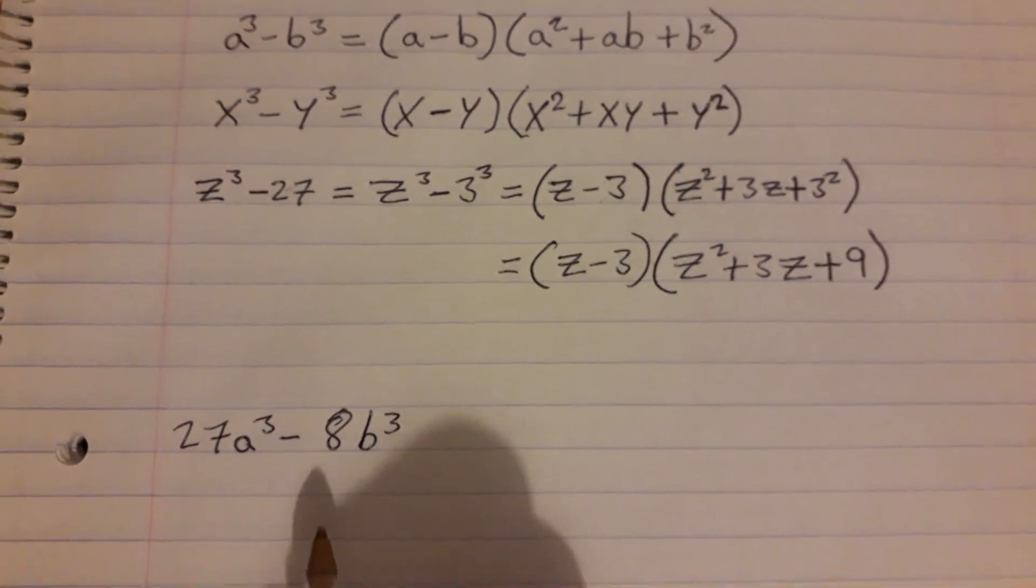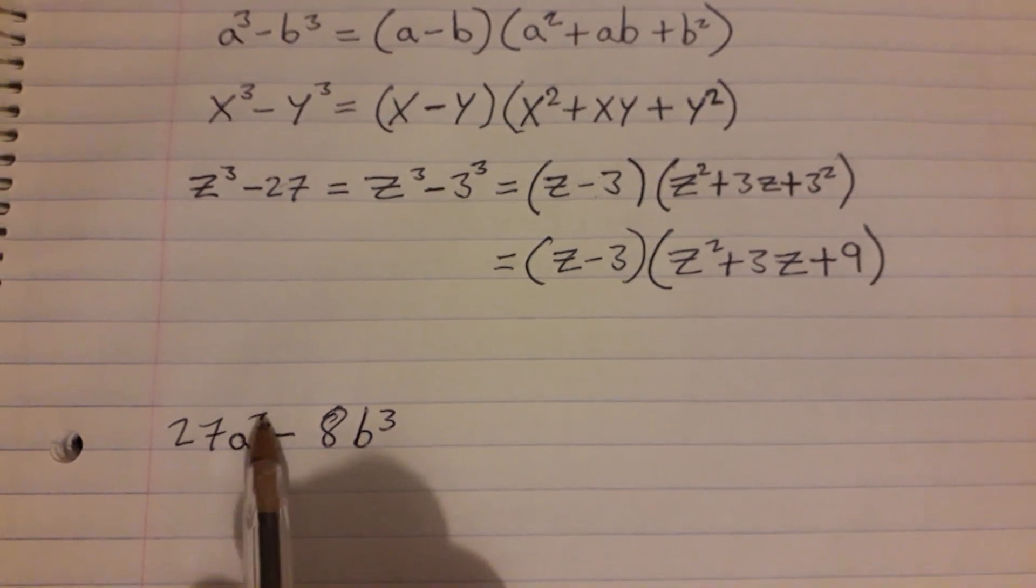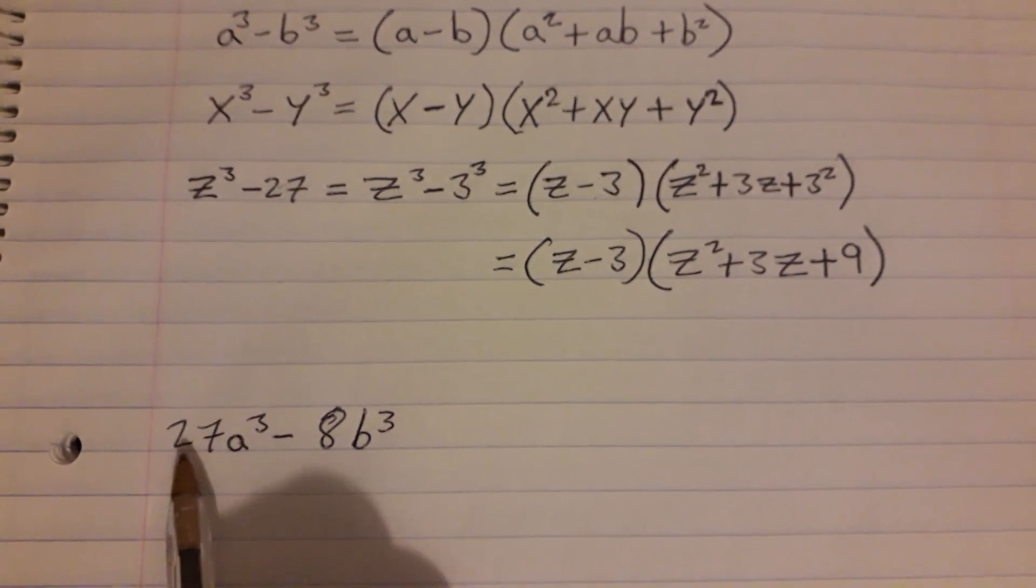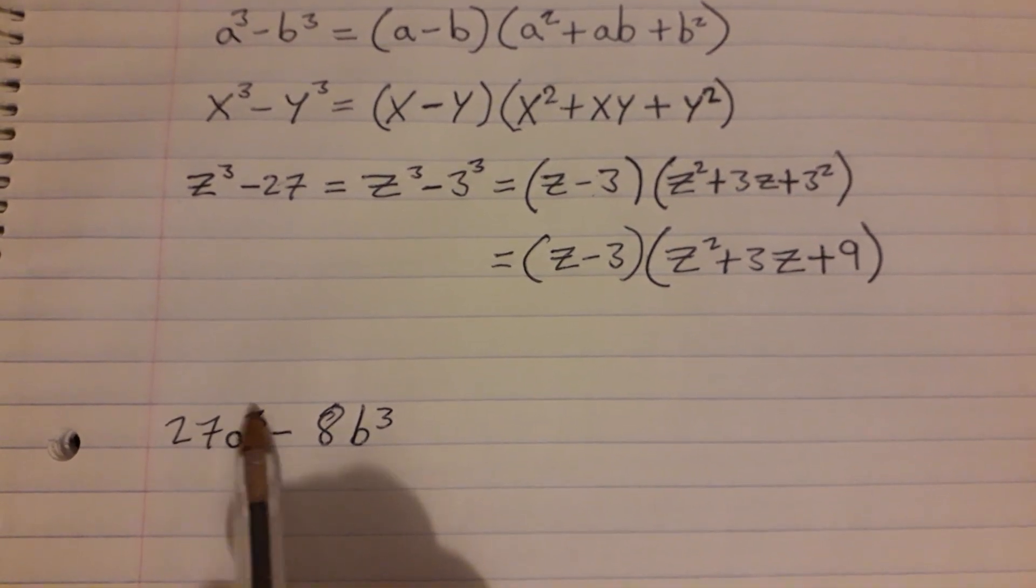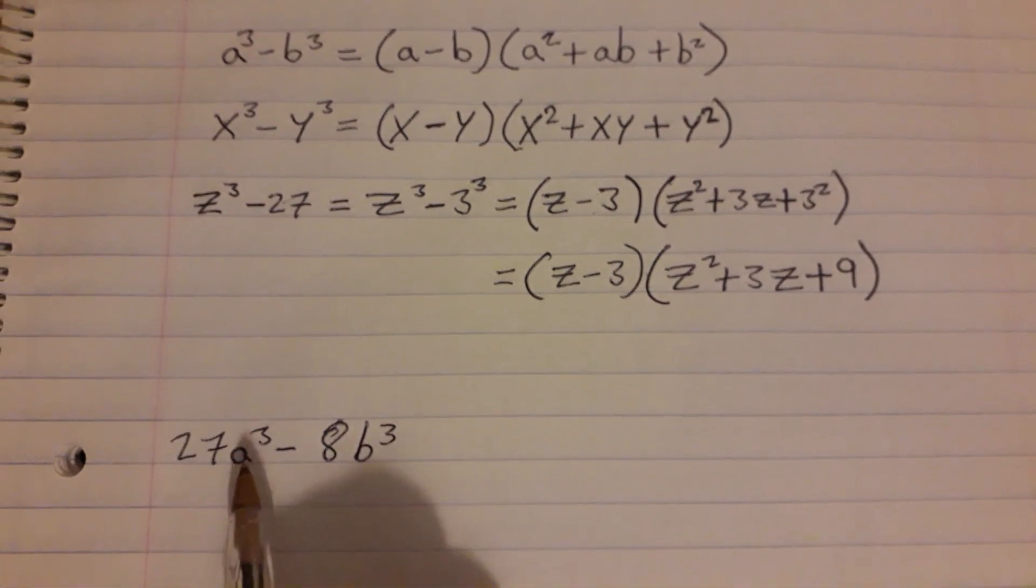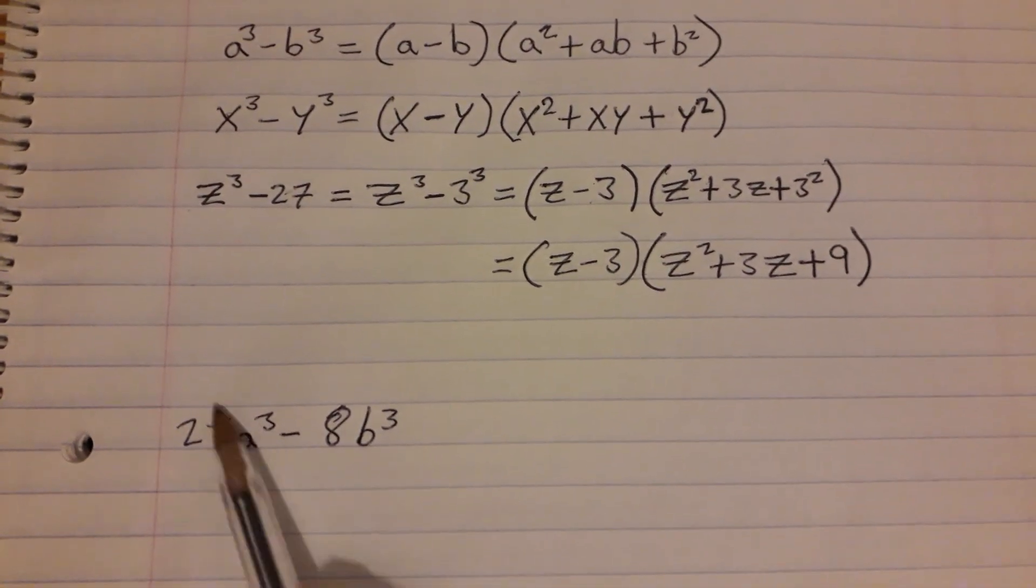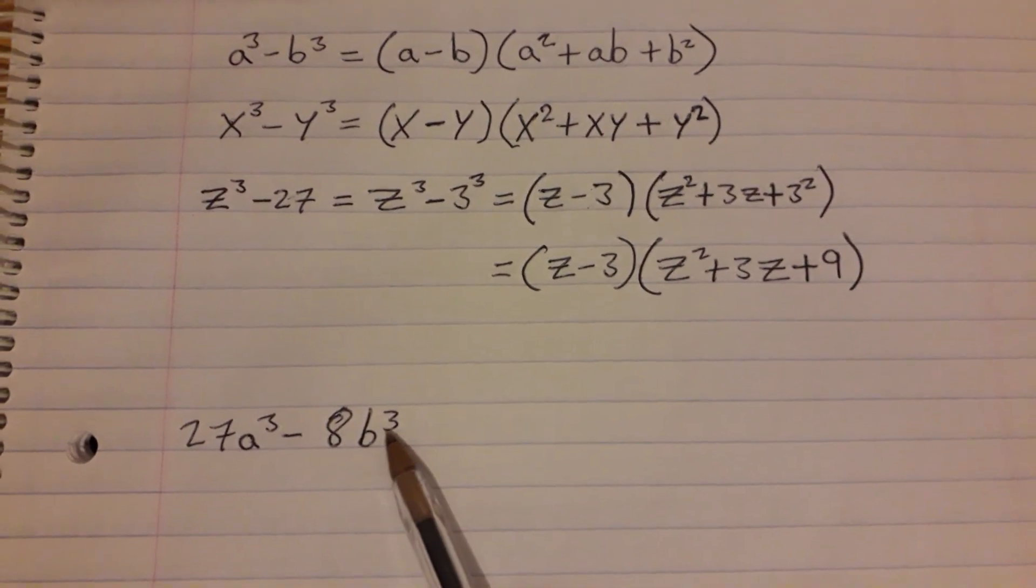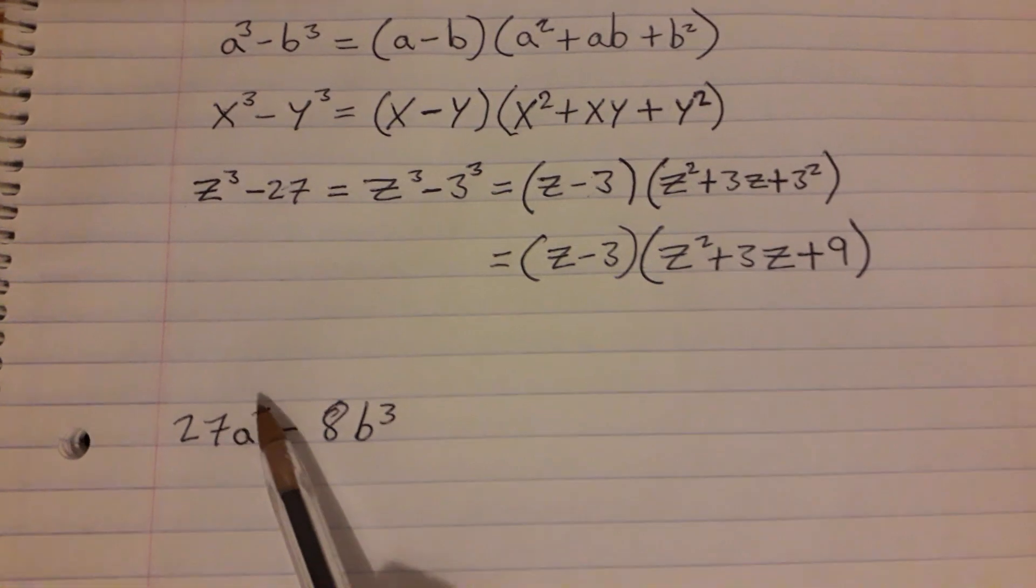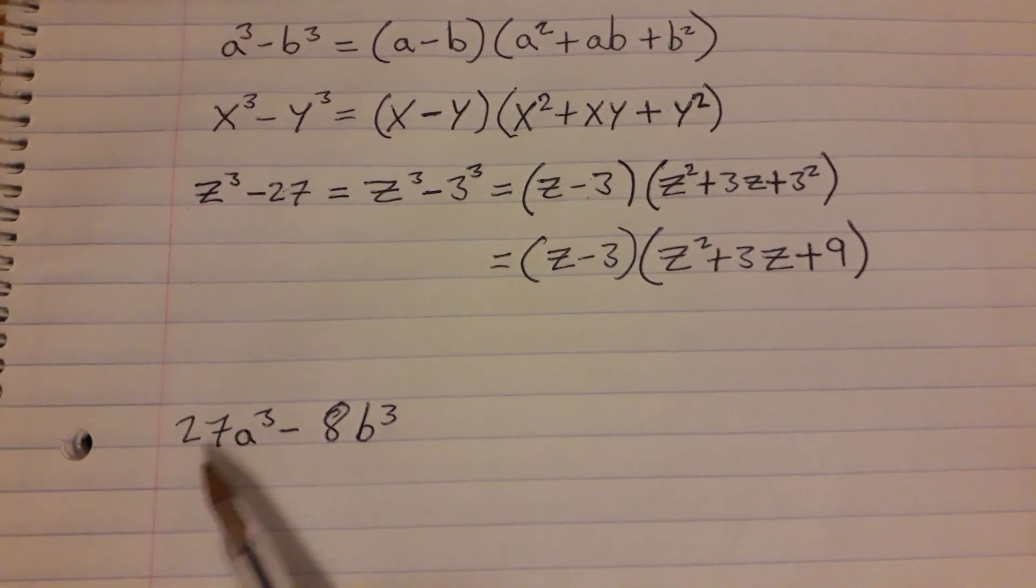The reason it's not in the right format is because the a here is being cubed but the 27 is not. This literally means 27 multiplied by a cubed. In order to use the difference of two cubes like up here, everything in the first position must be being cubed and everything in the second position must be being cubed.